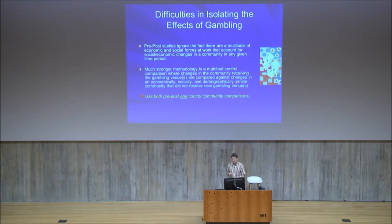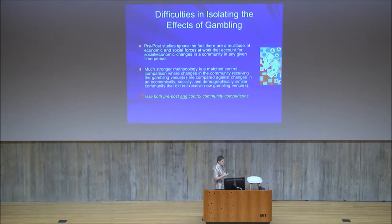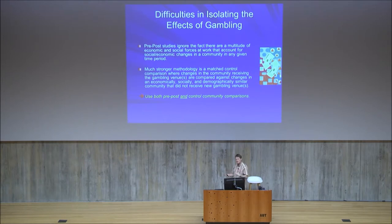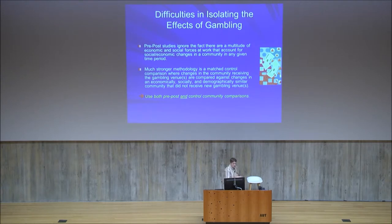Difficulties in isolating the effects of gambling — most socioeconomic impact studies simply do pre-post analyses, but that ignores the fact that there are many other things in society and an economy that cause economic and social changes at that time. It's very difficult to attribute those changes just to gambling. A much stronger methodology is when you have a controlled community — comparing the changes in the community getting gambling venues against a matched control community that didn't get venues. That's often easier said than done, but you should still aspire to do such a thing.